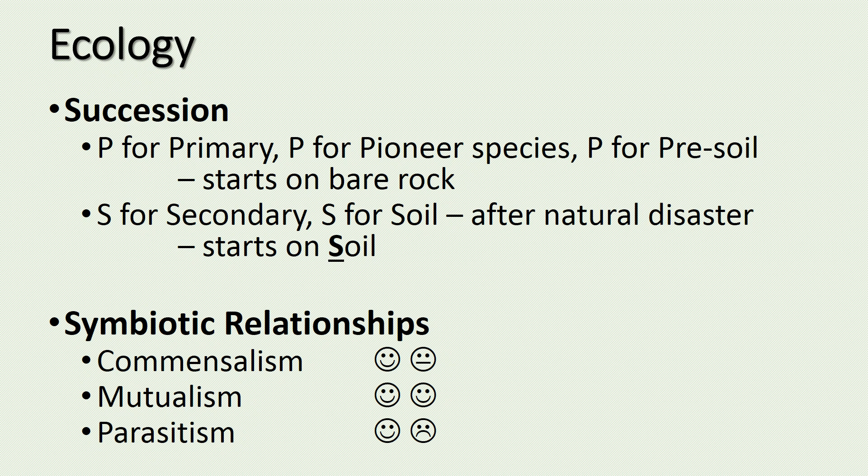Both types of succession will increase biodiversity over time. Your symbiotic relationships — there are three important relationships to remember. Commensalism: one species benefits while the other remains unaffected. Mutualism: both species are benefiting. And parasitism: one species benefits while harming the other.